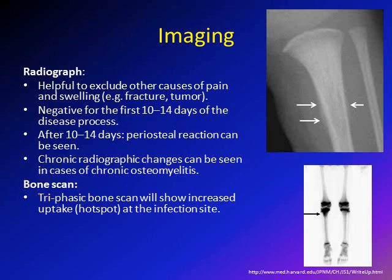A triphasic bone scan is a very useful imaging tool to detect infection. It measures blood flow to the bone in three time periods, and in cases of infection it appears as a hot spot at the infection site. In this example, the bone scan shows increased uptake — a hot spot — in the upper right tibia compared to the left, indicating osteomyelitis.